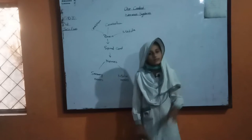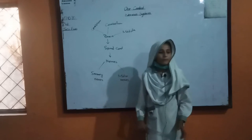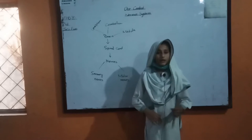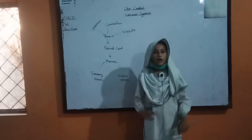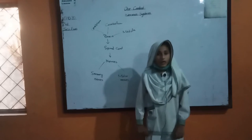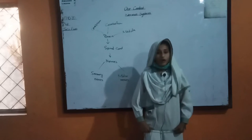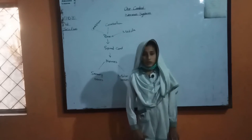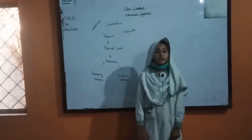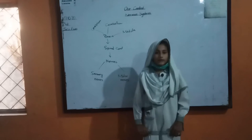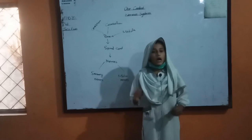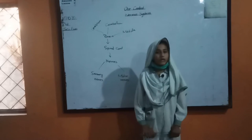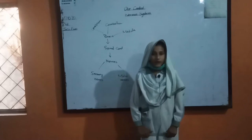First, we can discuss the cerebrum. Cerebrum is the largest part of our brain. It is 85% of the brain. It controls voluntary action. It is also the leading part of our brain.